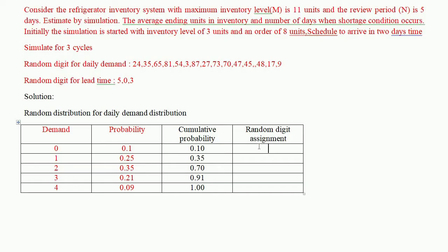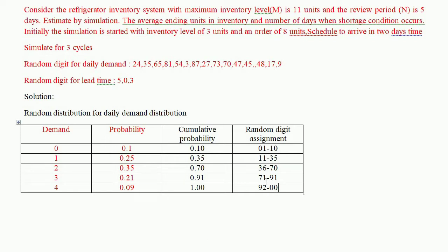For random digit assignment, the random digit always lies between 0 and 1. Since we have two digits after the decimal, we assign two-digit random numbers. The assignment is: 01–10, 11–35, 36–70, 71–91, and 92–00. This completes the random digit assignment for the daily demand distribution.